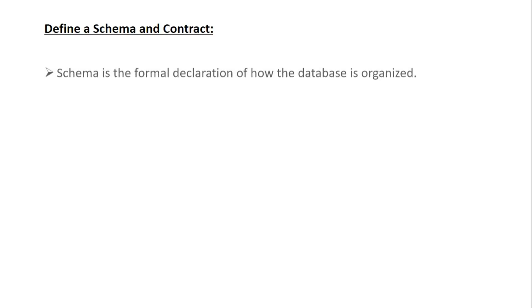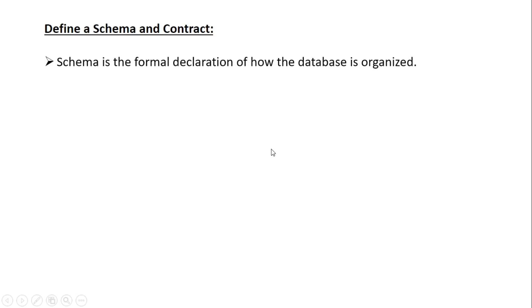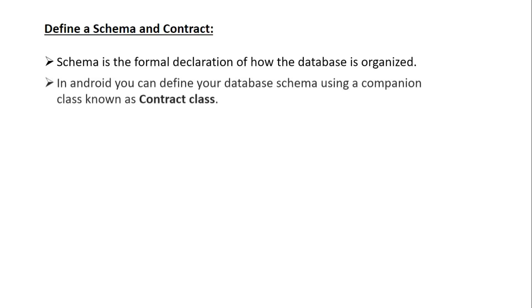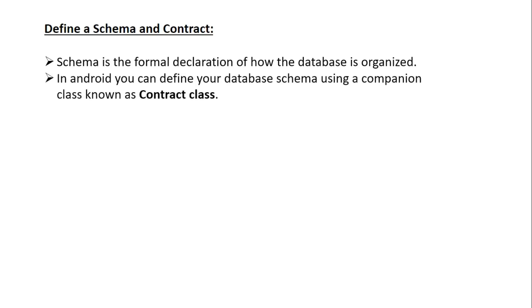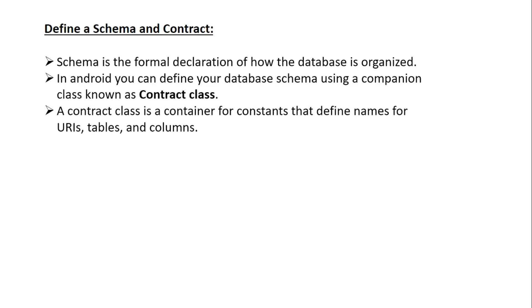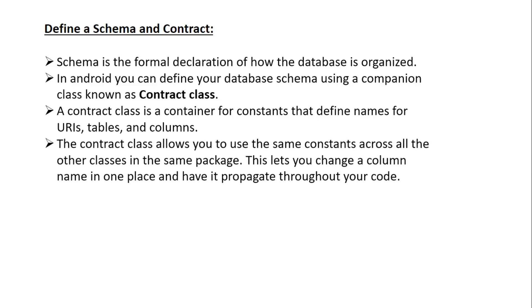Now we can learn about how to implement SQLite database in your Android application. The first thing you have to do is define a schema and contract class. A schema is the formal declaration of how the database is organized. In Android, you can define your database schema using a companion class known as a contract class. A contract class is a container for constants that defines names for URIs, tables, and columns. It allows you to use the same constants across all other classes in the same package, so you can change a column name in one place and have it propagate throughout your code.